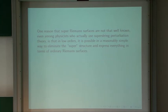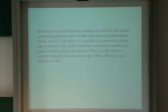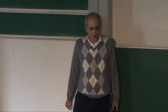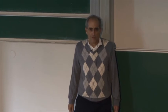One reason that super-Riemann surfaces didn't become well known even among string theorists is that even among practitioners of superstring perturbation theory, many do not think in terms of super-Riemann surfaces. In low orders it's actually possible in a reasonably simple way to eliminate the super-structure and express everything in terms of ordinary Riemann surfaces. This is what people usually do in practice — Friedan, Martinec, and Shenker showed how to do it. But if you try to base a general understanding on reducing things to ordinary Riemann surfaces, things soon become highly unintuitive and untransparent.